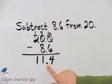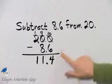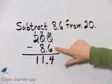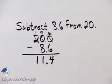Now how can you check subtraction? Take 11 and 4 tenths, add to it 8 and 6 tenths, and that sum should be 20. It will be.